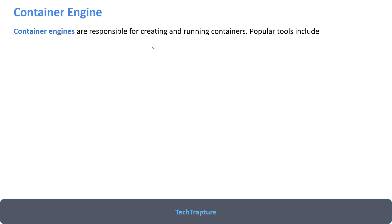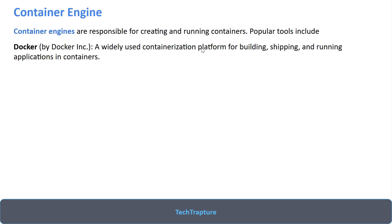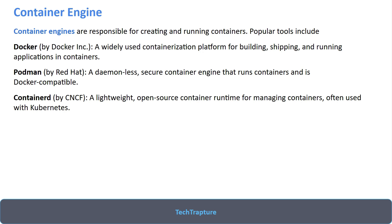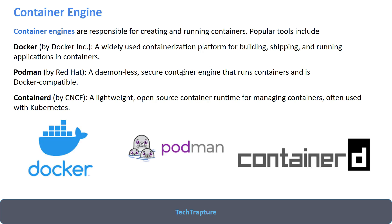Now let's understand container engines. Container engines are responsible for creating and running containers. They build all dependencies and source code together into a container image and ensure containers run independently. The most widely used container engines are: Docker — the most famous containerization platform for building, shipping, and running applications; Podman by Red Hat — a daemonless, secure, Docker-compatible container engine; and containerd by CNCF — a lightweight, open-source container runtime used alongside Kubernetes.